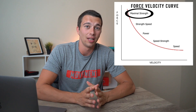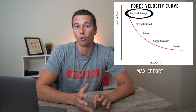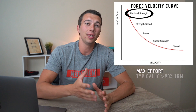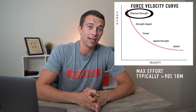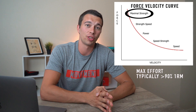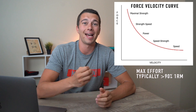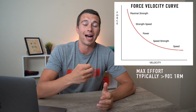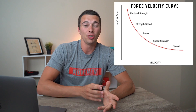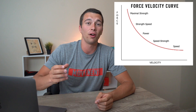Starting at maximal strength, we have something like a one rep max bench or a one rep max squat, potentially a two or a three rep max, but typically we're going to be above 90% one rep max in the max strength portion. That max strength phase is often associated with max effort — those high effort, slow grinding type reps.